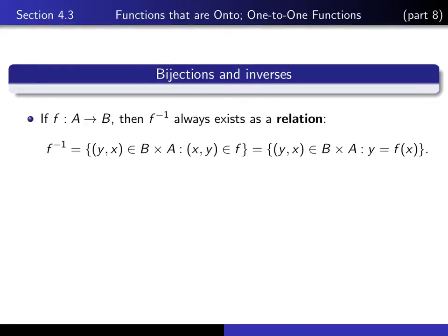If f is a function from set A to set B, then it's always the case that f inverse exists as a relation. As a relation, it's defined to be the set of all ordered pairs yx in B cross A, such that xy is an element of f. And since f is a function, that's the same thing as saying the set of yx in B cross A, such that y is equal to f of x.